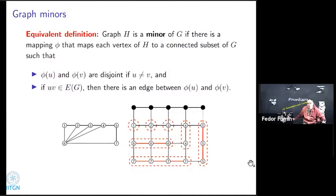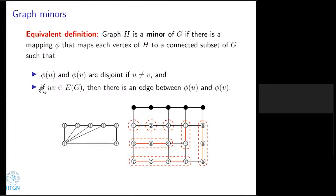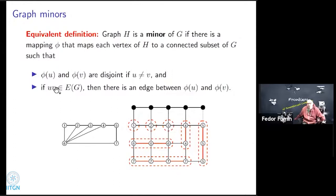A clarifying question was raised: in the mapping definition, the adjacency condition should require an edge between images when u and v are adjacent in H (not G). That was a typo — yes, if two vertices are adjacent in H, there should be at least one edge between their images in G. For example, vertex six and vertex four are adjacent, so there should be an edge between their images.